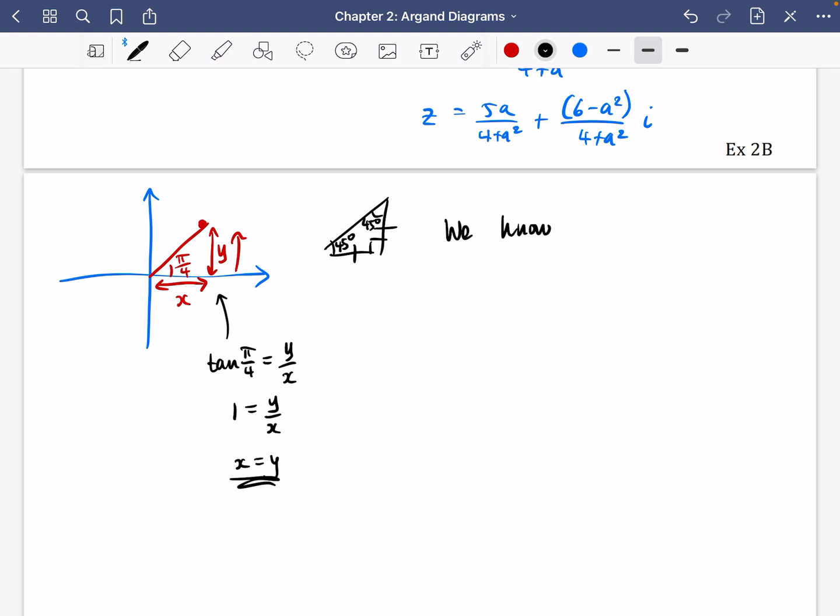So what we know about this complex number here is that the x part and the y part must be equal to each other because the argument is π over 4. So we know that x equals y because the argument of z equals π over 4. So let's just continue now with the problem. We now know that the x part, which is 5a over 4 plus a squared, must be equal to the y part, which is 6 minus a squared over 4 plus a squared. Well, we can multiply both sides by this 4 plus a squared here. So we get 5a is 6 minus a squared, and you've got this quadratic that comes up. So obviously I'm going to put everything to one side. So it's a squared plus 5a minus 6 equals 0.